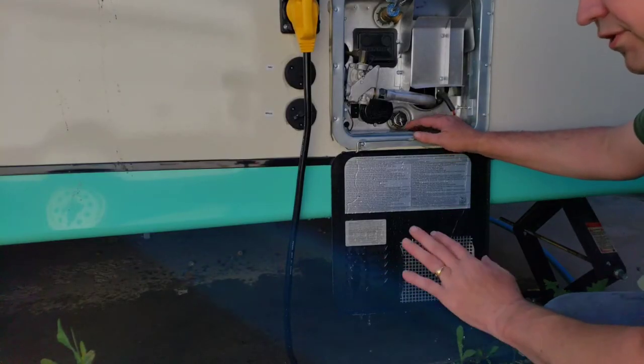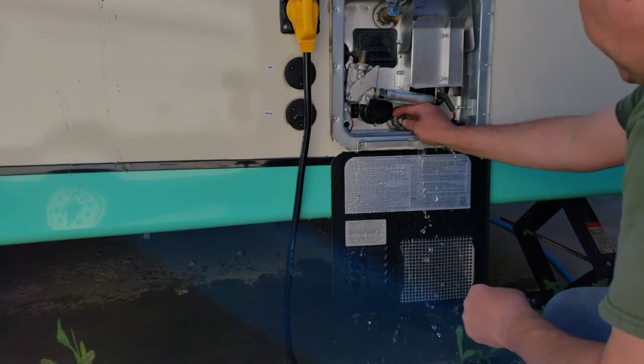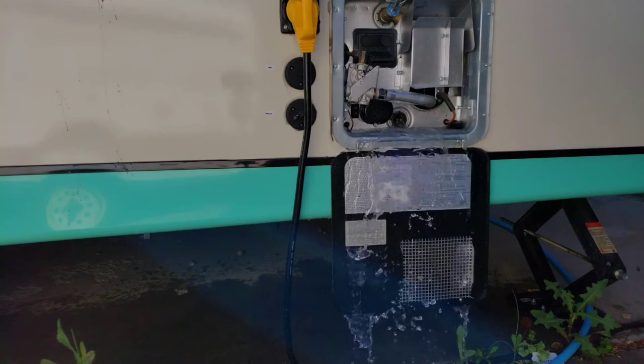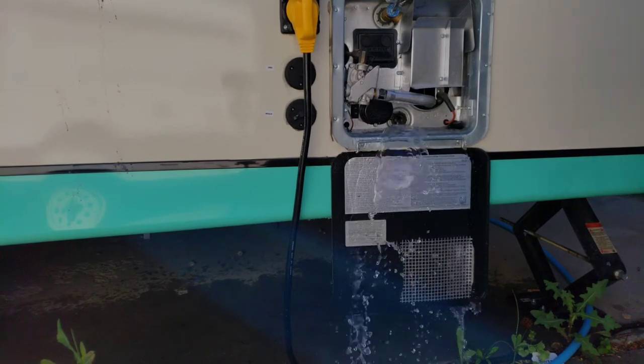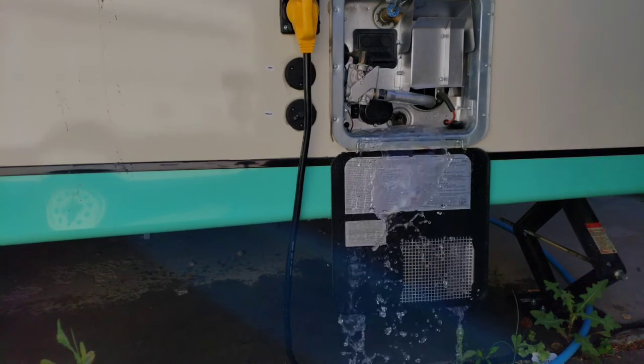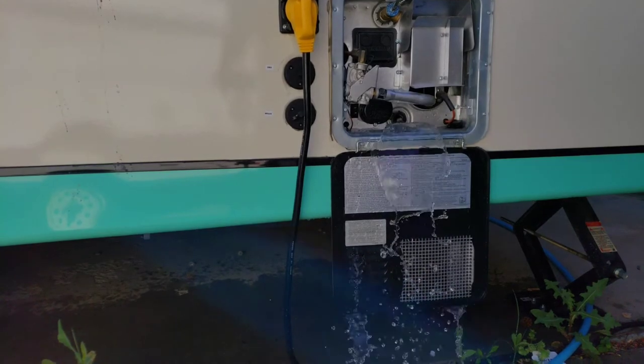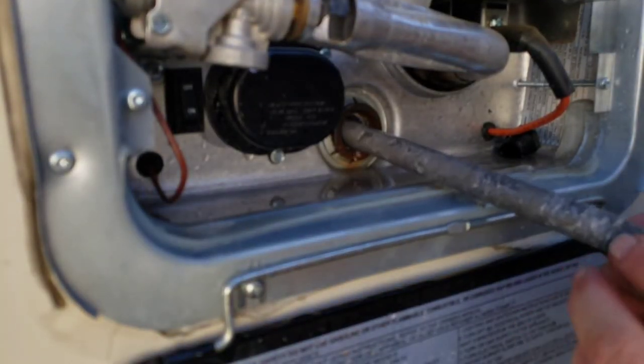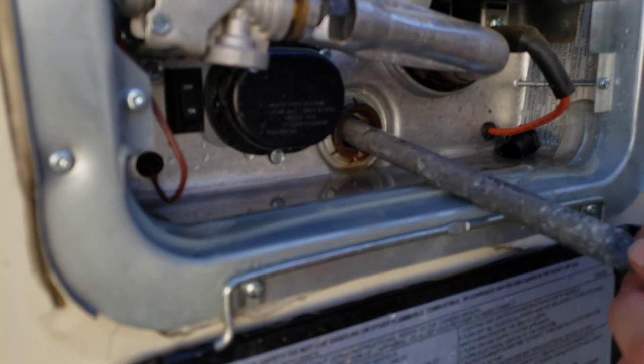So before I put the antifreeze in permanently, I always take and put a little water in the tank. Pull that out, just kind of let it flush out so that we get a good rinse of the tank. So we put some fresh Teflon on here. It just started to come off.